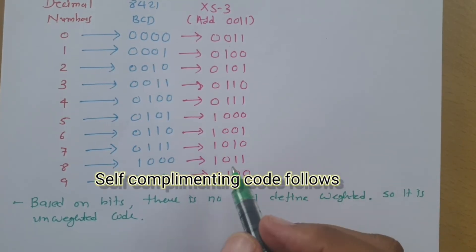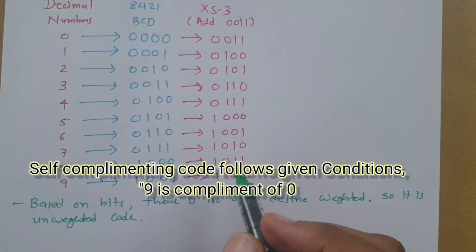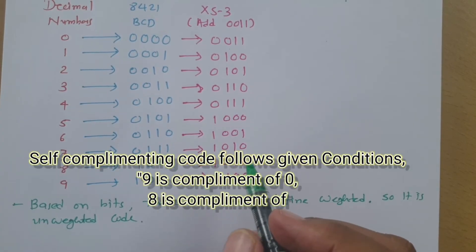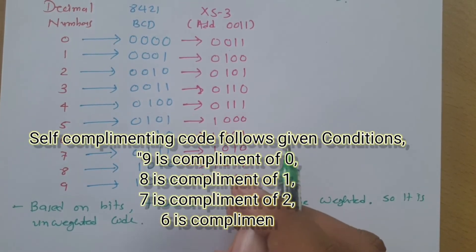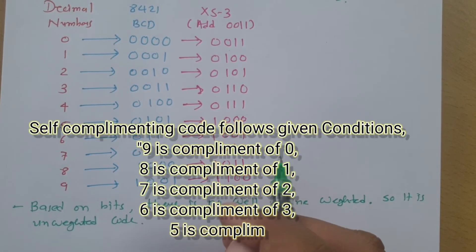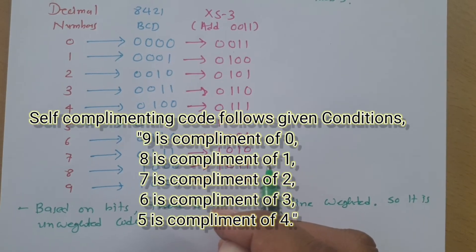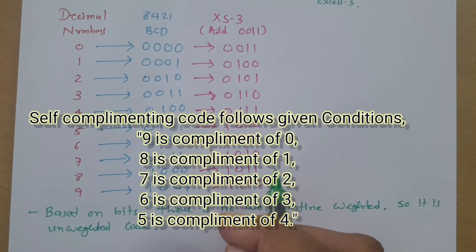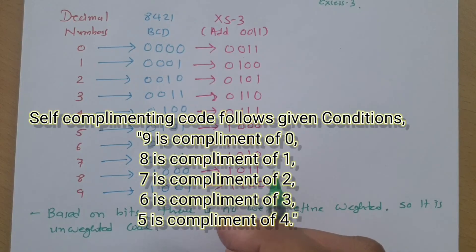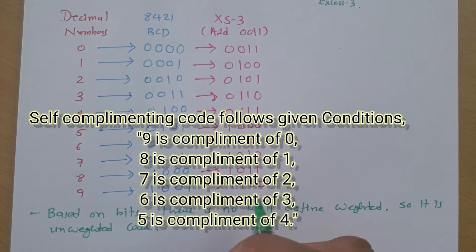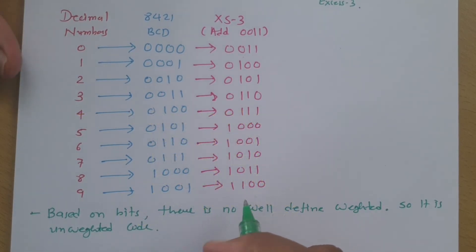Now we need to prove that Excess-3 code is a self-complementary code. What is a self-complementing code? 9 is the complement of 0, 8 is the complement of 1, 7 is the complement of 2, 6 is the complement of 3, and 5 is the complement of 4. If a code follows this property, it is called a self-complementing code.